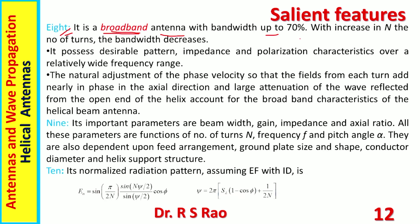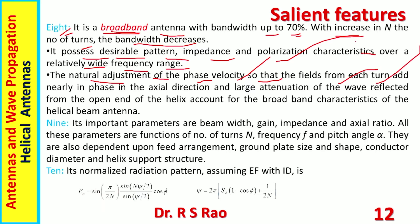Bandwidth can be up to 70 percent — a huge quantity. With an increase in N (number of turns), gain increases but bandwidth decreases. The antenna possesses desirable pattern, impedance, and polarization characteristics over a relatively wide frequency range. The natural adjustment of the phase velocity so that fields from each turn add nearly in phase in the axial direction, and the large attenuation of the wave reflected from the open end of the helix, account for the broadband characteristics of the helical antenna.